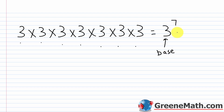The 7 — this small number in the top right corner — is the exponent. The exponent tells us how many factors of 3 we have.